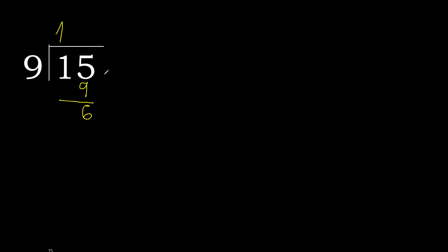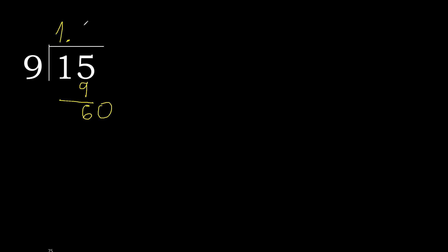Next, there is no more digit, therefore complete — always complete with 0 here, with point. Ok. 9 multiplied by 7 is greater. Multiplied by 6: 54. Subtract. Complete.